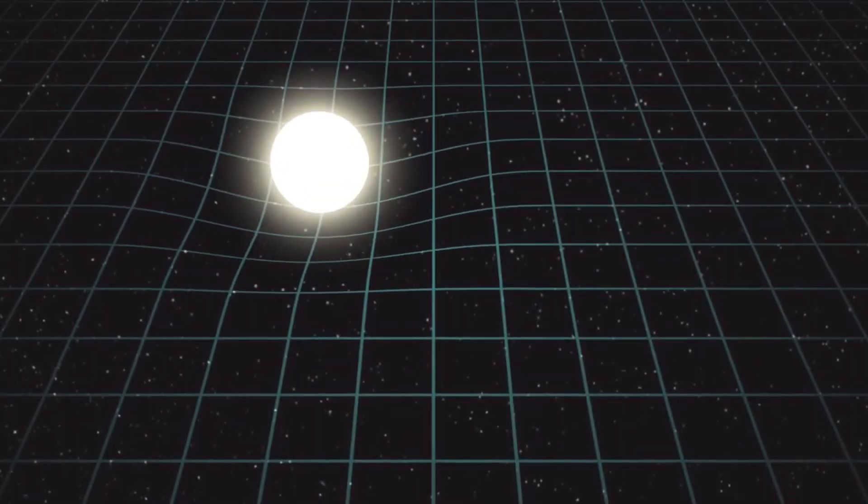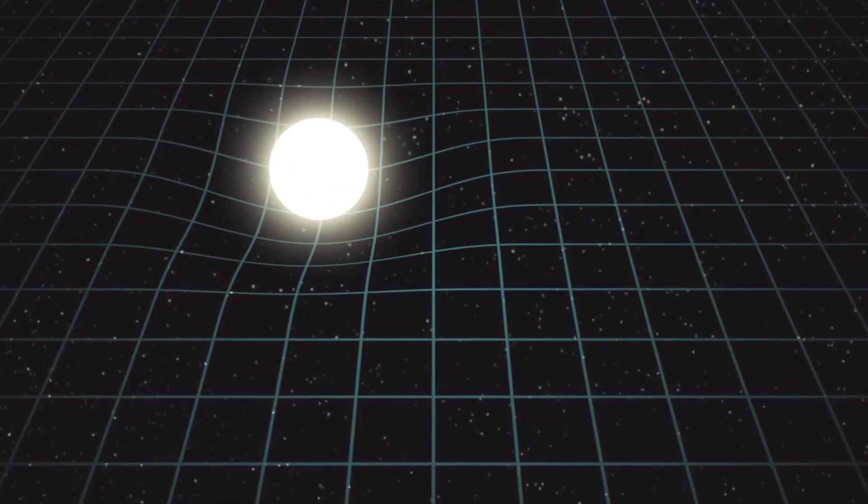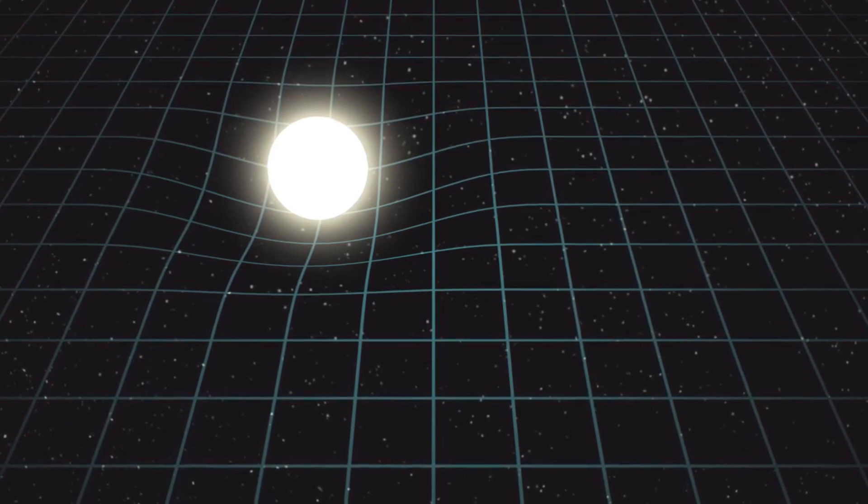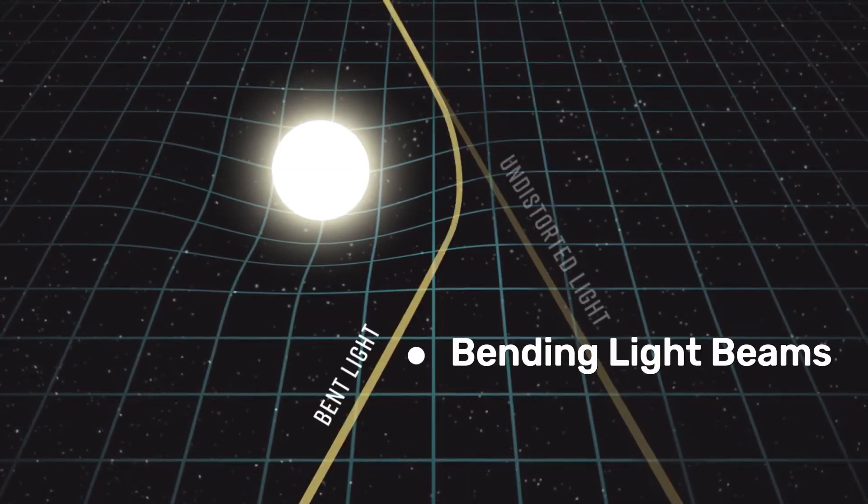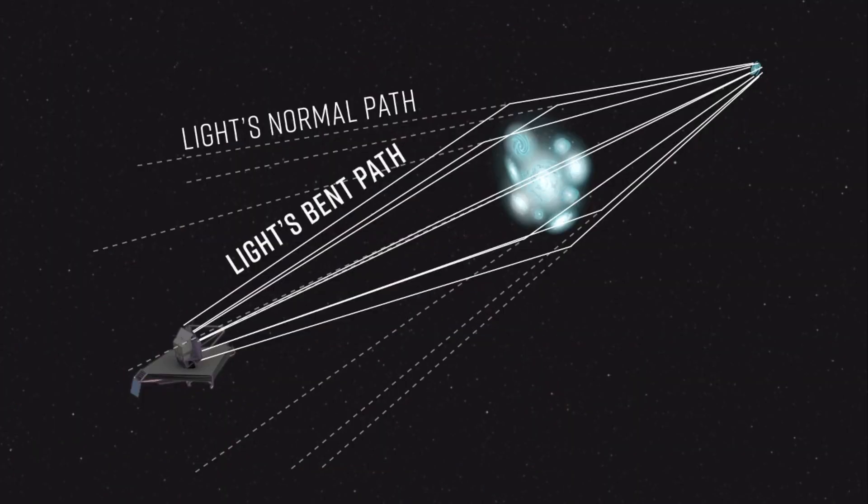Imagine space as a mattress. A bowling ball on the mattress creates a dent, curving the fabric. Likewise, massive objects like galaxy clusters dent the fabric of space, bending light beams. This acts like a gravitational lens, allowing telescopes to see magnified, focused views of distant galaxies like Sparkler. It's a cosmic zoom lens.